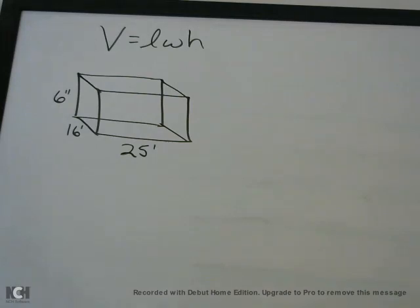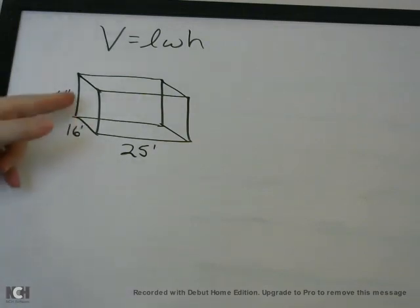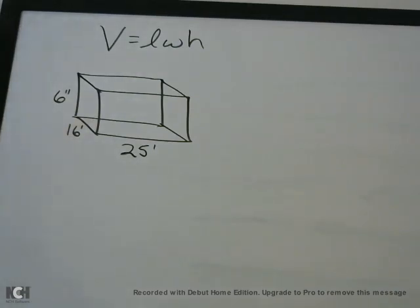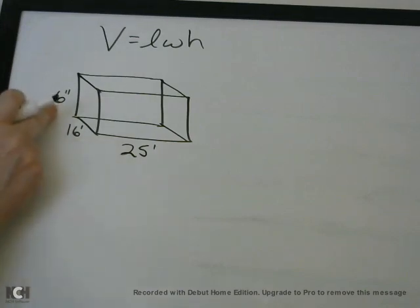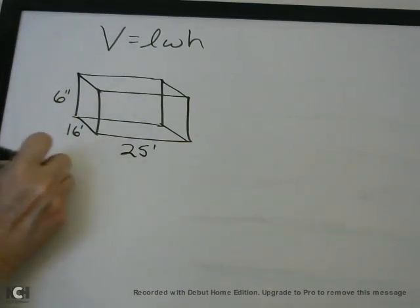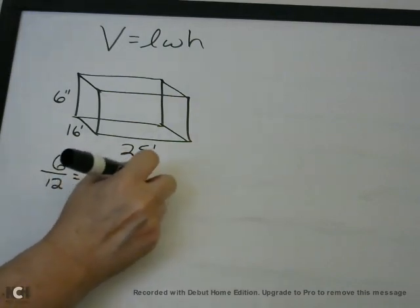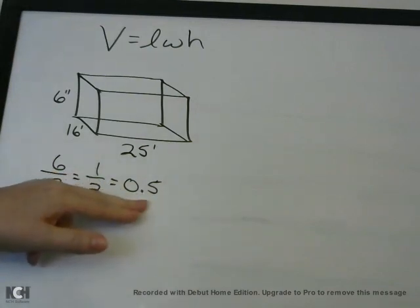Be careful when you're doing these problems — really any sort of geometry type problems: area, perimeter, volume. Here you have feet, but here you have inches, and you can't multiply feet and inches together. They all have to be the same units. You can either change everything to inches or change everything to feet. Since we have two numbers in feet, we're going to change to feet. We know there are 12 inches in a foot, so 6 divided by 12 is one half, which as a decimal is 0.5. So 6 inches is 0.5 feet, or half a foot.